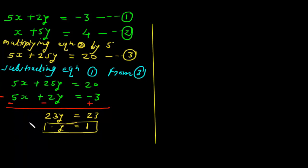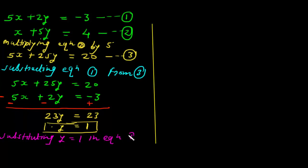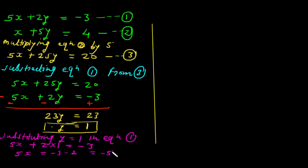By substituting y equals 1 into equation 1, we get 5x plus 2 into 1 equals minus 3. So 5x plus 2 equals minus 3, meaning 5x equals minus 3 minus 2, which equals minus 5. Therefore x equals minus 1.